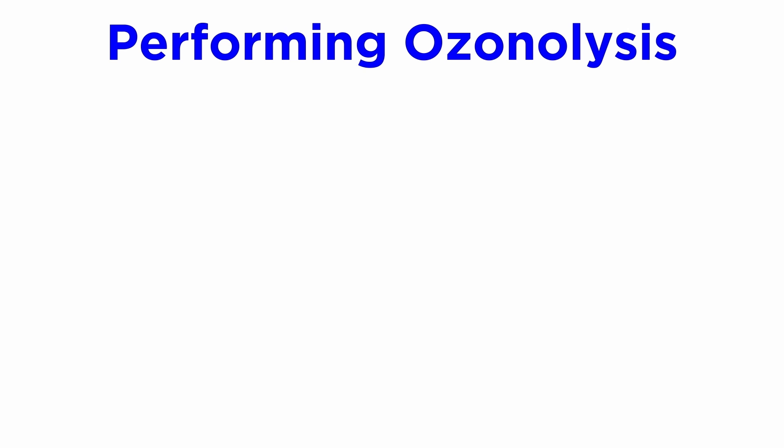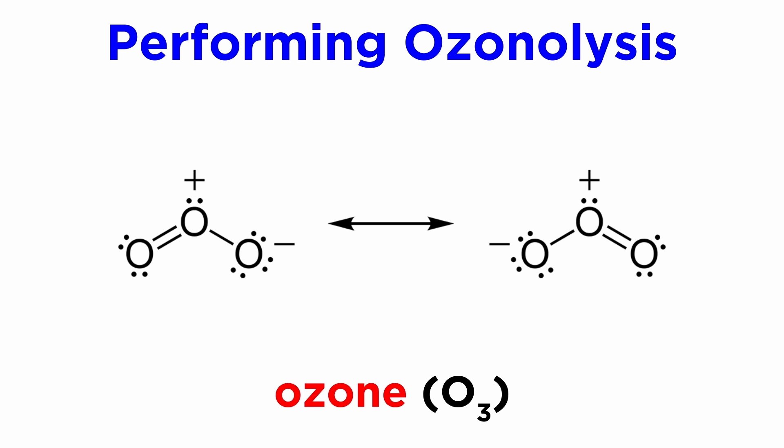First we will look at a reaction called ozonolysis. This is a useful way to break a carbon-carbon double bond. When performing ozonolysis, the key reagent will be ozone. This is an allotrope of oxygen with the structure O3, so it is triatomic oxygen.